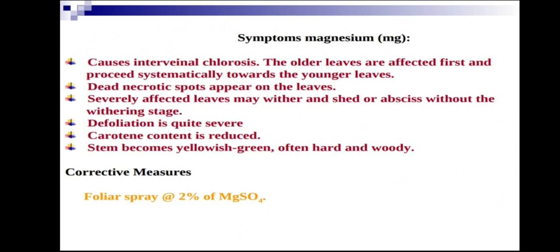Dead necrotic spots appear on the leaves where tissues are dead. Severely affected leaves may wither and shed, or abscise without the withering stage. Defoliation is quite severe. Carotene content is reduced — meaning the color of foods and vegetables is reduced. The stem becomes yellowish-green, often hard and woody.